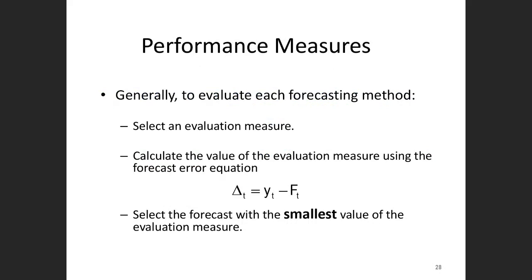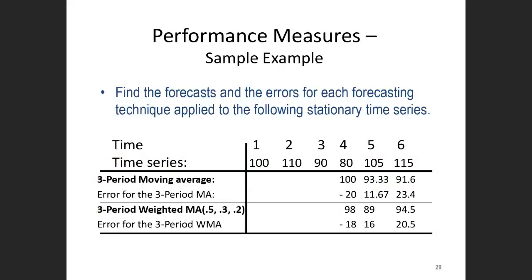The error delta is the observed value minus the forecast. For example: 80 minus 100 equals minus 20; 105 minus 93.33 equals 11.67; 115 minus 91.67 equals 23.4. These are the errors for the three-period moving average method.